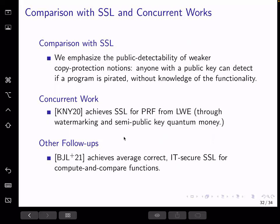So we can do copy detection for large families of functions and what's our comparison with the security of SSL. So we want to emphasize that one main difference is we emphasize the public detectability of our scheme. And anyone with the public key can detect the program, whether it's pirated or not, even without any knowledge of functionality. And this is guaranteed by the security of public key quantum money and public extractable watermarking. And generally, we believe the two notions actually have the same level of security. For example, if we combine check algorithm in the copy detection together with the universal circuit evaluation of a quantum program, we can get the evaluation algorithm as required in the SSL scheme.